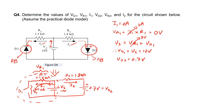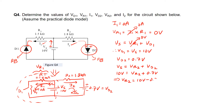To find VR2, doing a KVL in the right hand side loop gives: Vs = VR2 + VD2. Vs is 10 volts and VD2 is the forward voltage of the diode, which is 0.7 volts. So VR2 is simply 10 volts minus 0.7 volts, which gives us 9.3 volts.